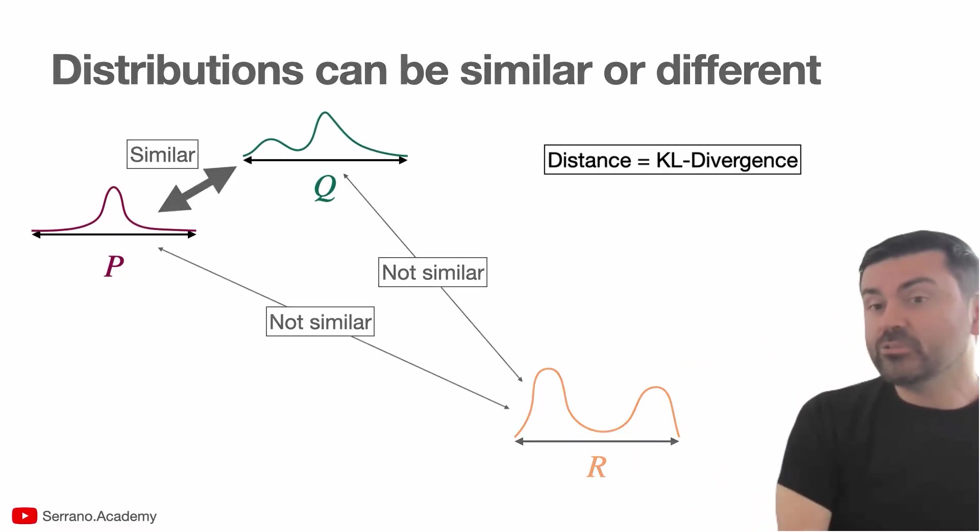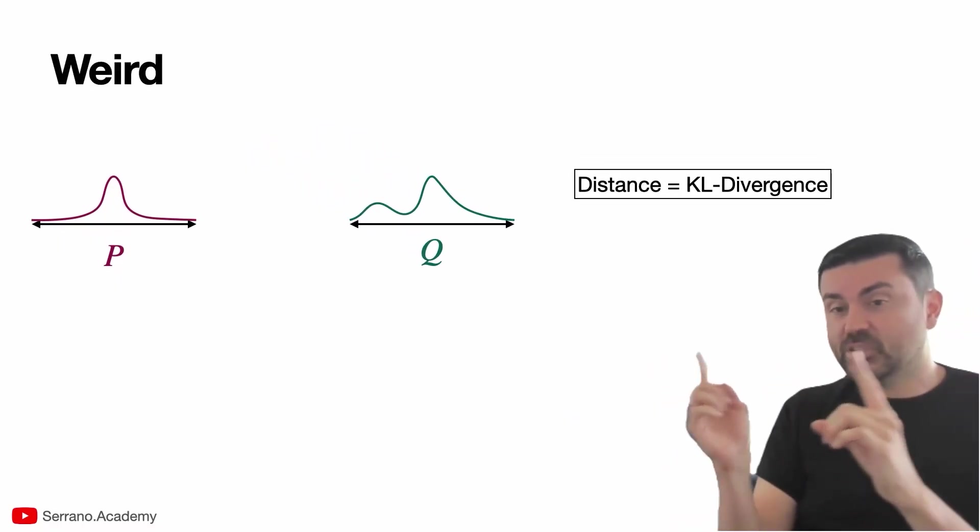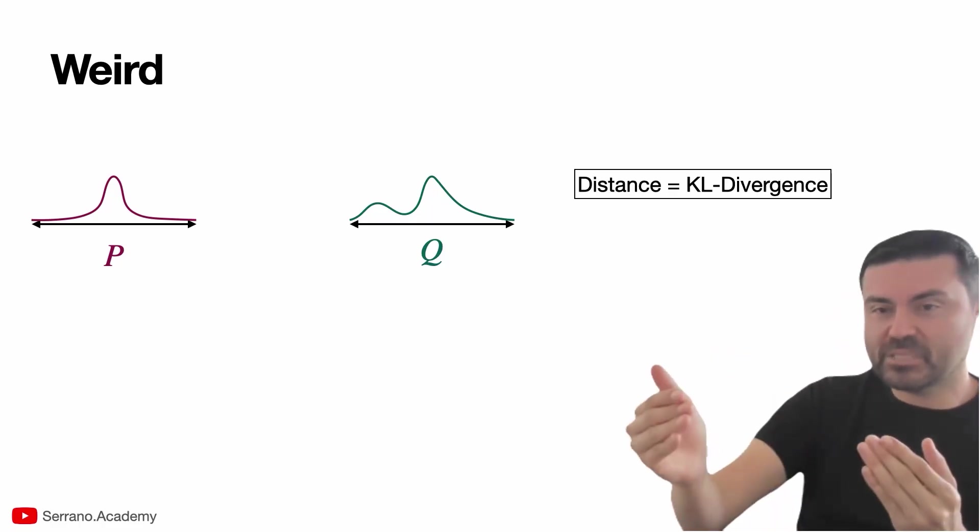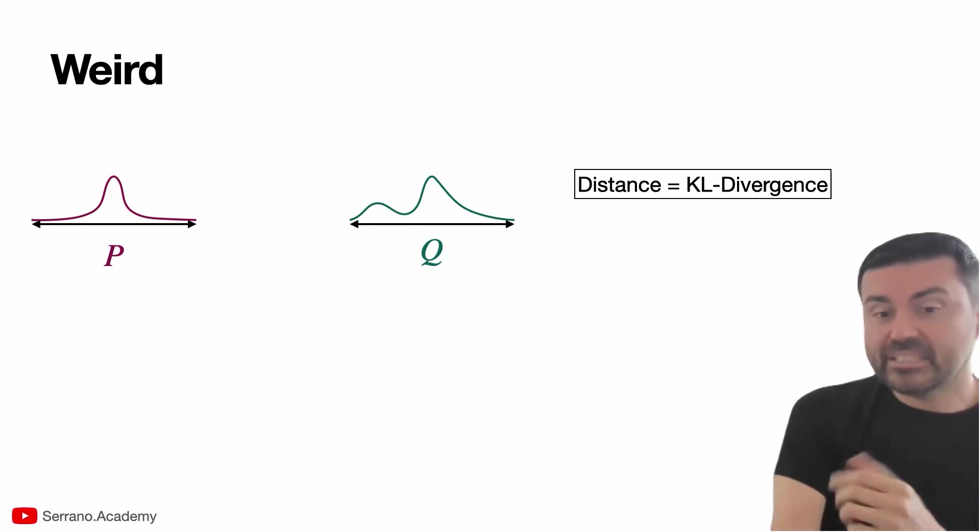However, a peculiar thing is happening, which is that the distance between P and Q is not the same distance between Q and P, which is not intuitive, right? If I'm standing five meters away from you, my distance towards you is the same as your distance toward me.